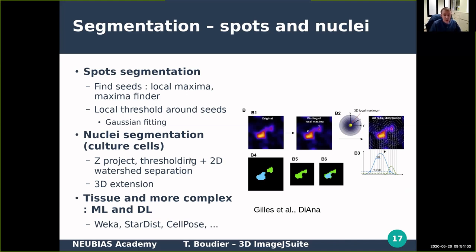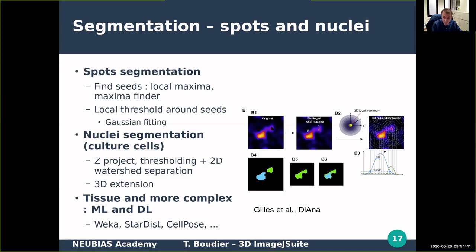For spot segmentation, we detect seeds using local maxima and then draw a profile of decreasing fluorescence around each seed — this should be approximately Gaussian. We fit a Gaussian and find a threshold based on it. Depending on each object, the local fluorescence decay creates a different local threshold around the seed. For nuclear segmentation, the approach is to project the 3D image to a 2D plane, do segmentation and separation in 2D, and then extend the segmentation back to 3D.